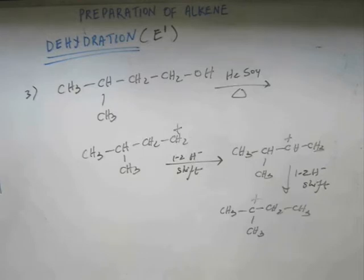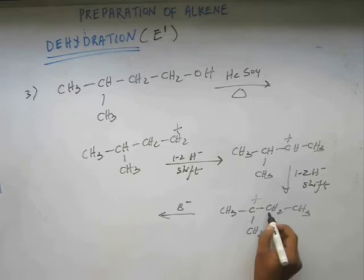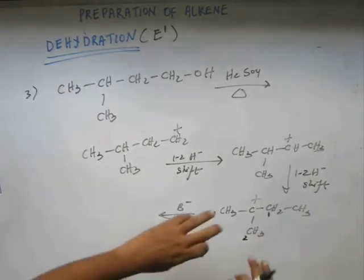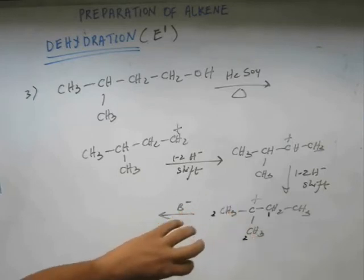Now let's move to third step. Then a base will come an abstract hydrogen. So this base can abstract hydrogen from where? There are two kinds of possibility. You have one and these two are same kind of methyl group, similar. Both methyl attached to this C plus.